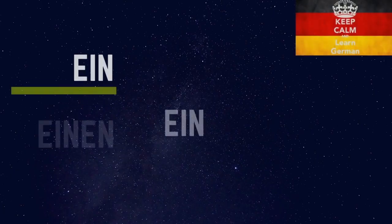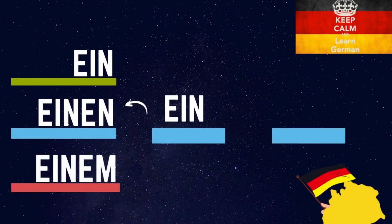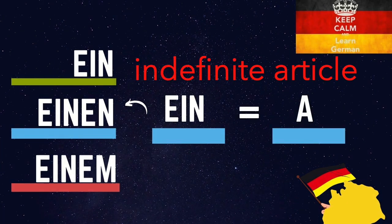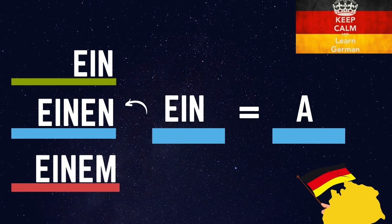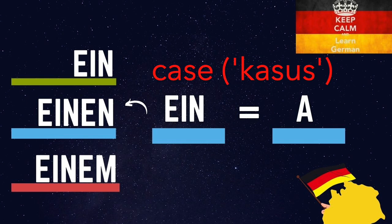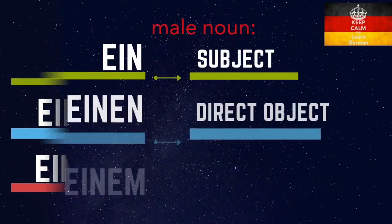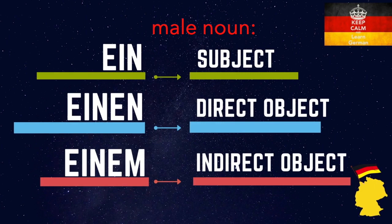But what's going on there? Ein, einen, and einem are three manifestations of the same word, which is the masculine form of the English indefinite article. So yes, all three words mean the same thing. The reason is that in German, you must change indefinite articles like ein according to the gender you are referring to, and according to the case — the Kasus of the sentence. Specifically, you use ein in front of a male noun that is the subject of the sentence. You use einen in front of the male noun that is the direct object of the sentence. And einem you use for the male noun that is the indirect object of the sentence.